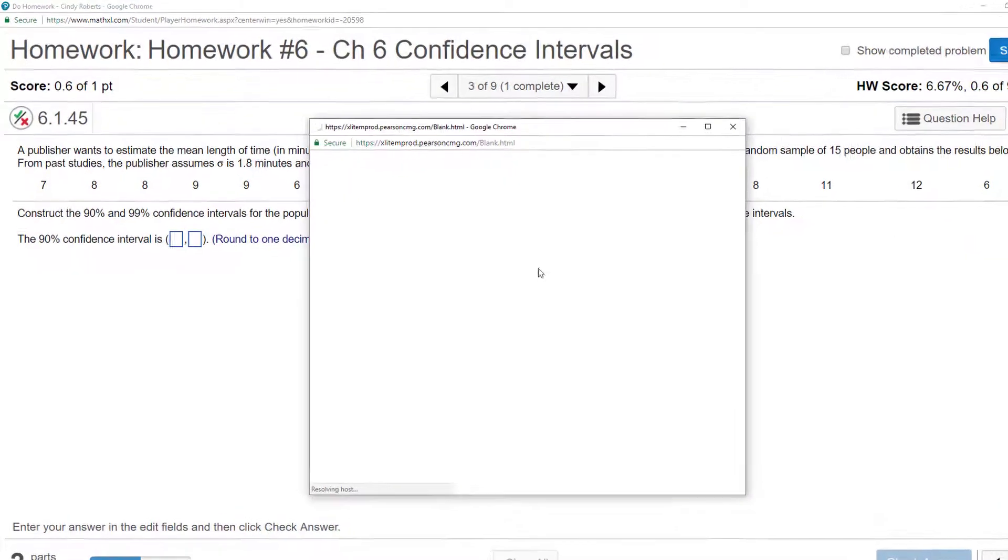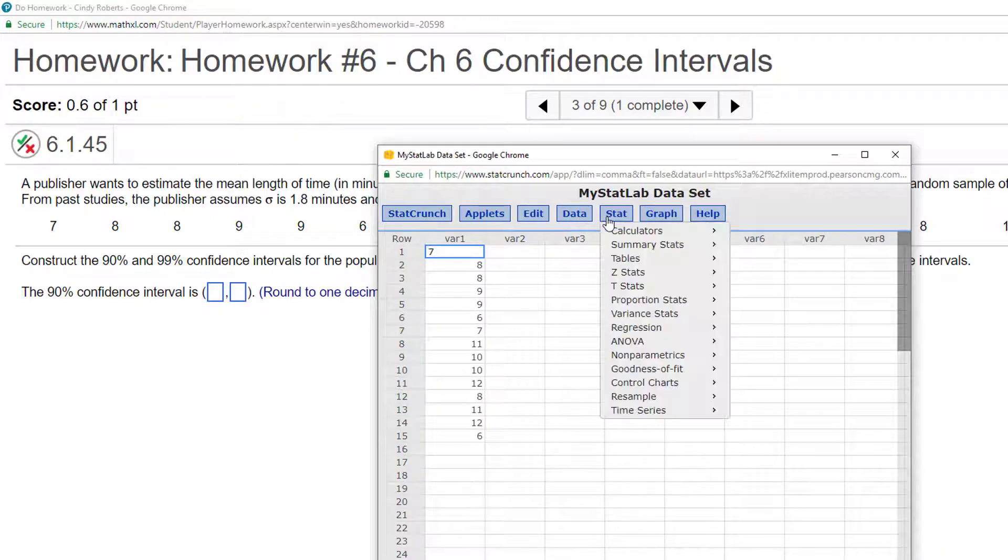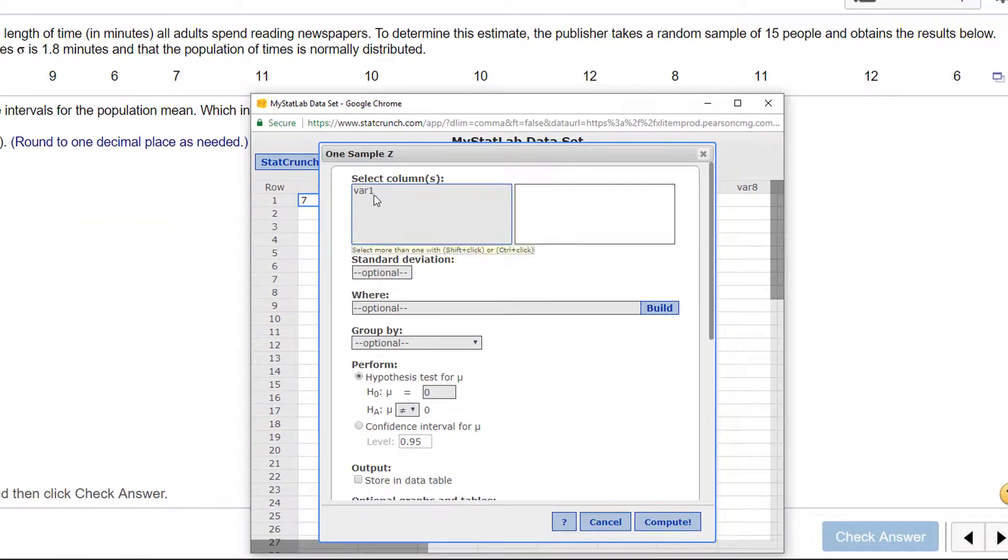I can open this data up in StatCrunch. I can go to Stat. This is a Z. How do I know it's a Z? You need to start asking yourself that question because you know the population standard deviation, so that makes it a Z, one sample with data because I have data.